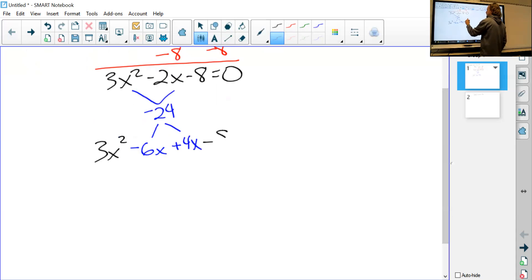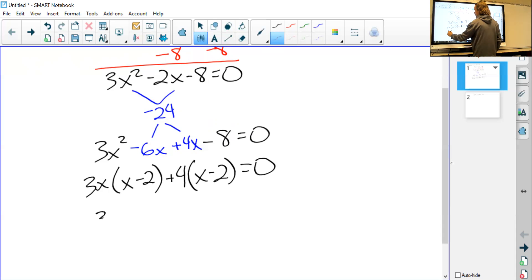Our factors of that would be -6x + 4x. I bring the rest down, so 3x² - 8. I can factor out a 3x here, that leaves x - 2. I can factor out a 4 on these, and that leaves x - 2.